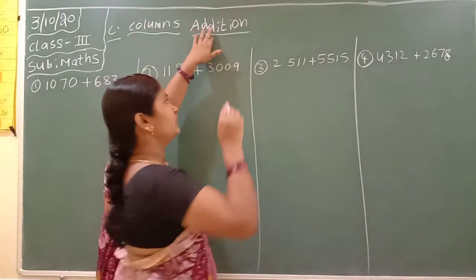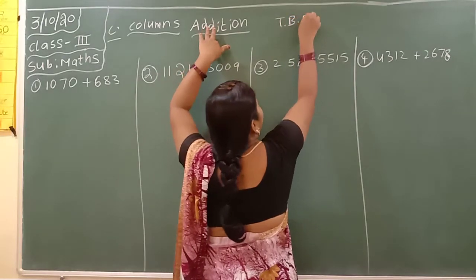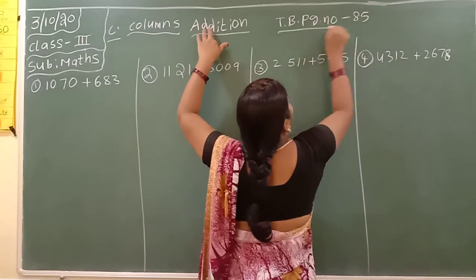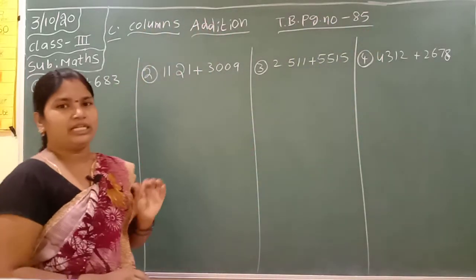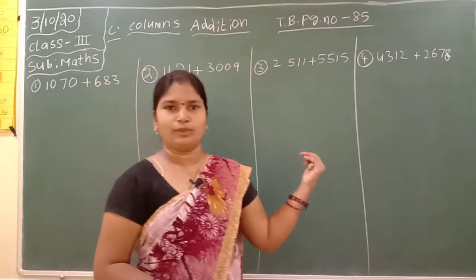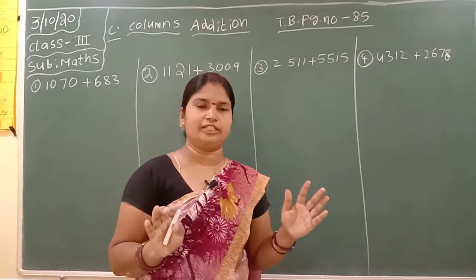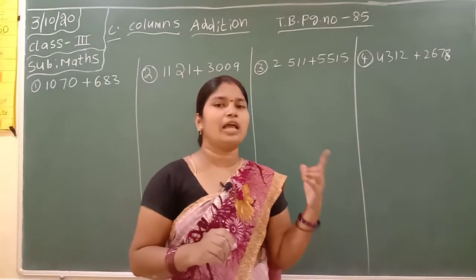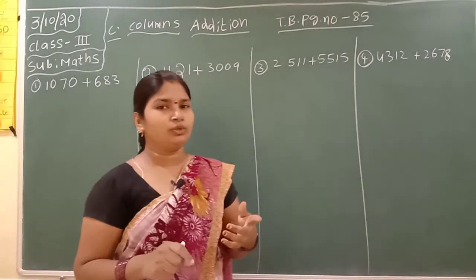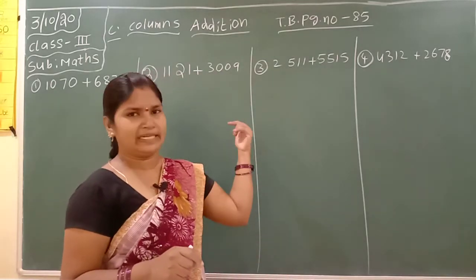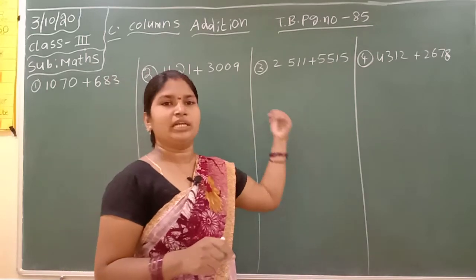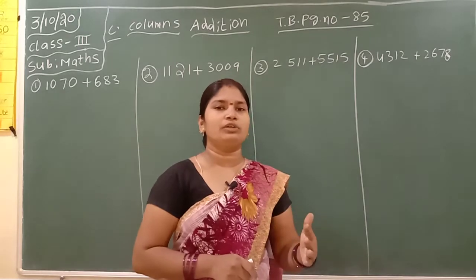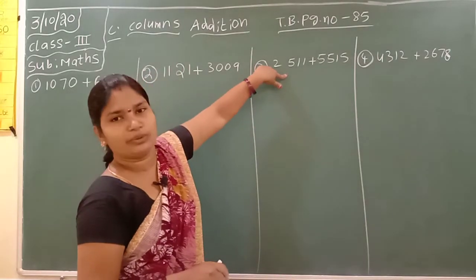That is in your textbook page number 85. See children, in your textbook for doing these problems place is not sufficient. So what we have to do? You have to take your math notebook. For math, separately you have to keep one notebook. In that notebook you have to write down day to day and start the chapter name, start the heading, then you have to write neatly, leaving one line after each answer for looking nicely.